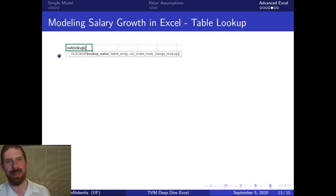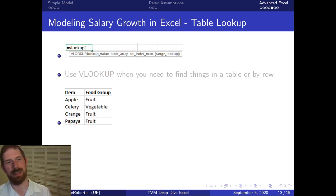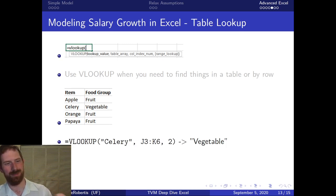And then the other function we're looking at to help us build out this model beyond the basic ones is VLOOKUP. VLOOKUP is a little bit more advanced and it helps you find things in a table by the row. We can look at an example here. We have a little table of four different foods, and then in the second column we have the food group that food belongs to, either a vegetable or a fruit.